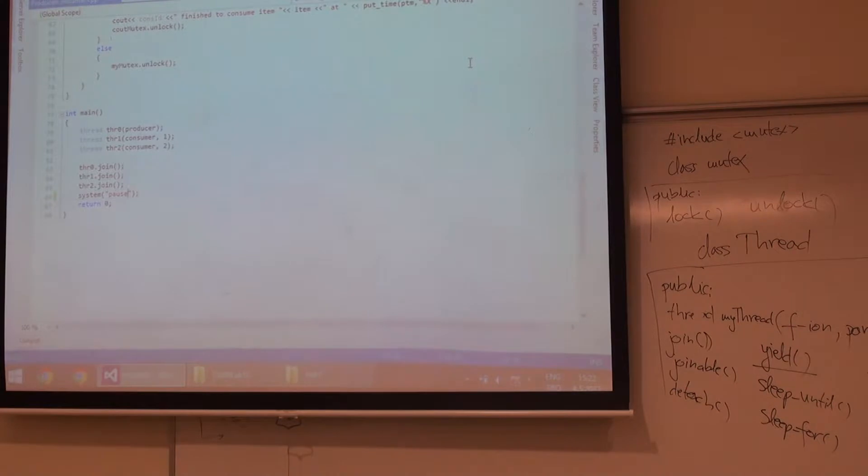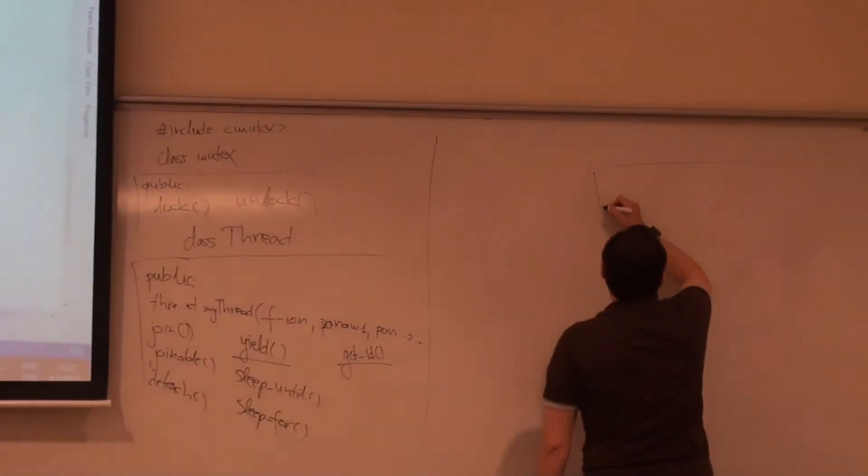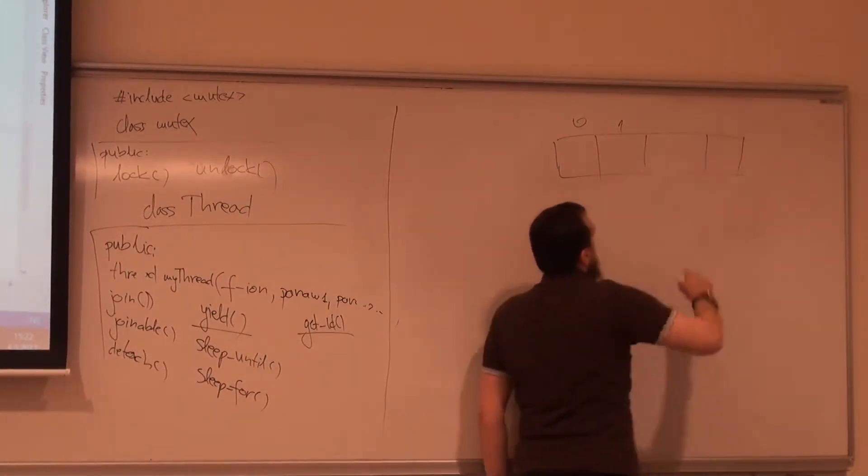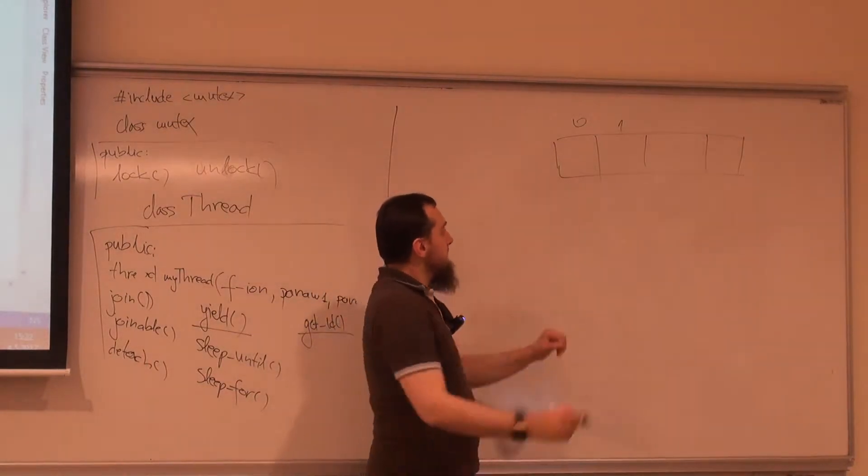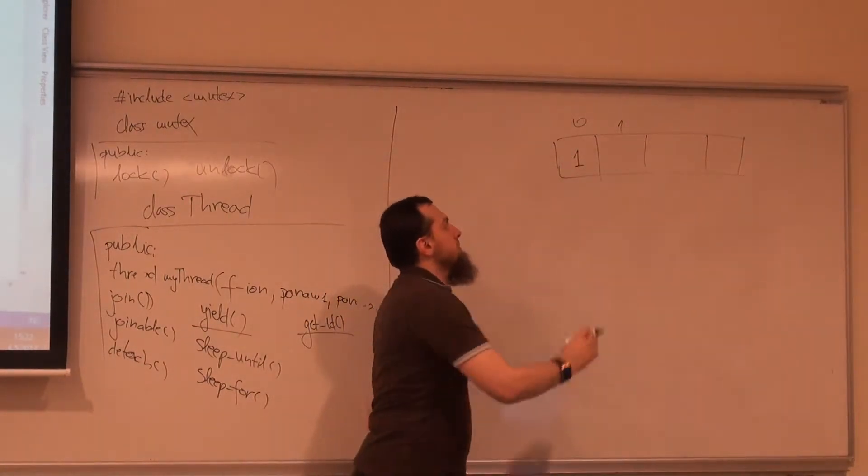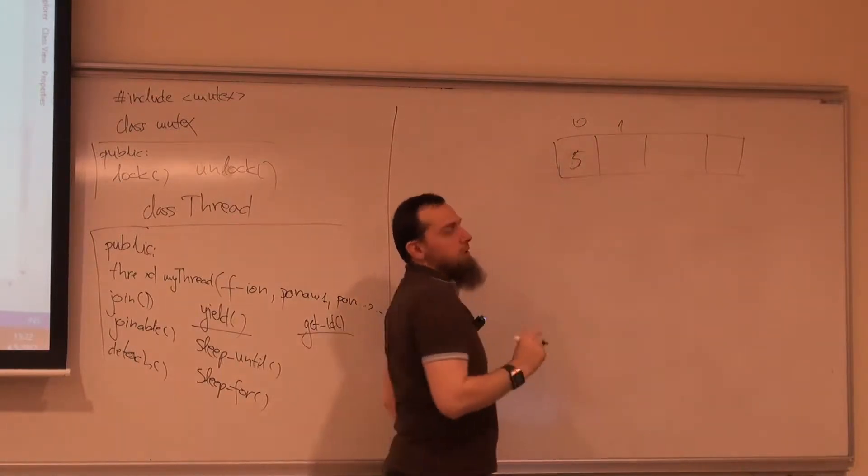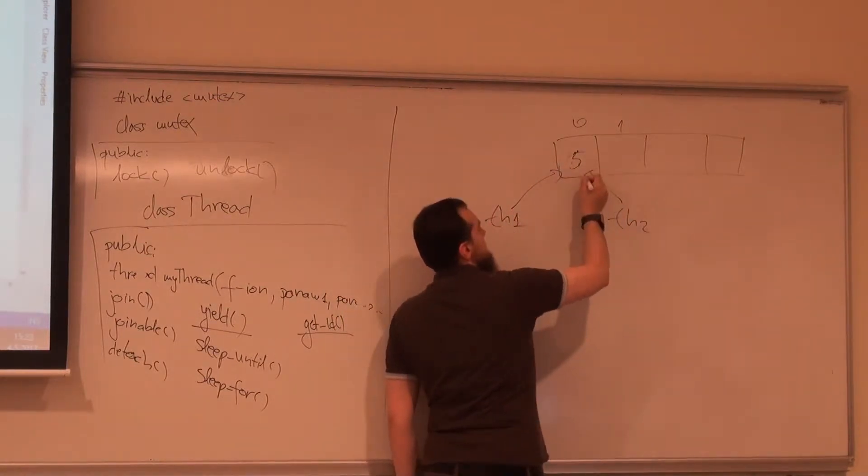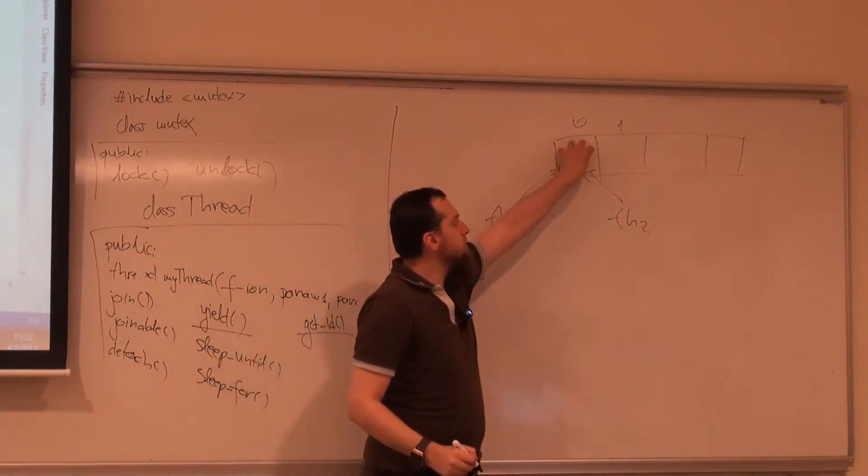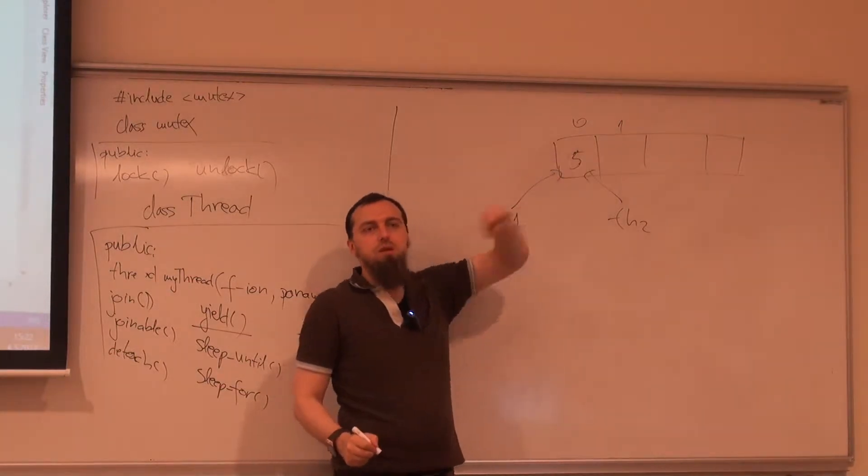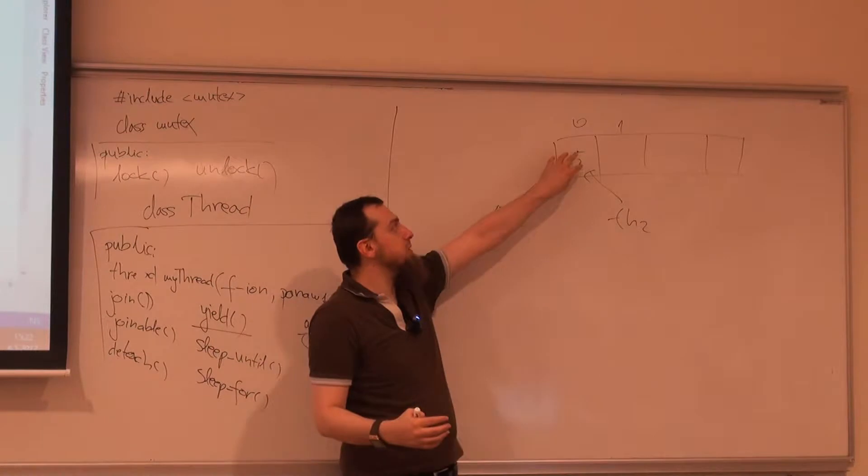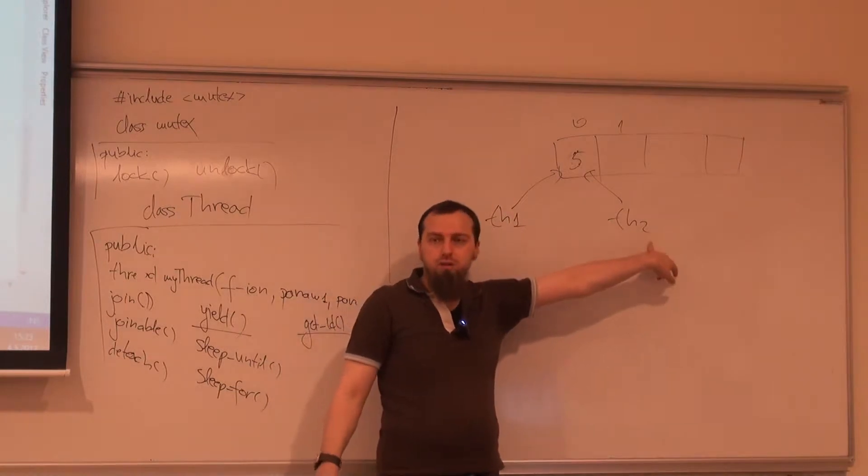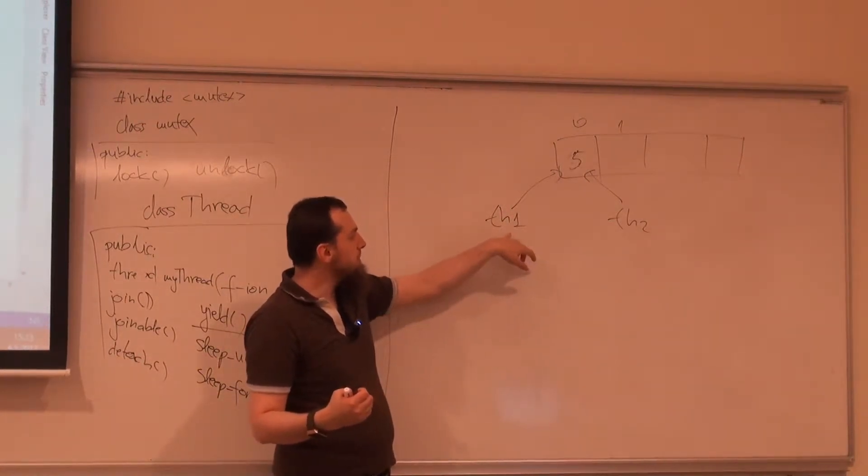So this is our queue, zero, one, up until size minus one element. Let's say that we have only one element in the queue. Let's say the value of that guy is five. And we have two threads, thread one trying to access it, and thread two, also trying to access it. Basically trying to see whether the queue is empty. If the queue is not empty, it's taking it and consuming it.